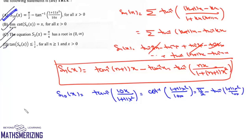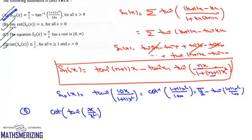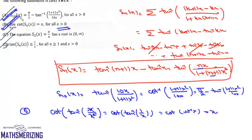Looking at option B, we take the limit as n tends to infinity of cot(S_n(x)). Taking the limit, tan inverse of (nx / (1 + (n+1)x²)): the coefficient of n in the numerator is x and in the denominator is x², so x and x cancel, giving cot of tan inverse(1/x). Since x is greater than 0, this equals cot of cot inverse(x), which is simply x. So option B is also correct.